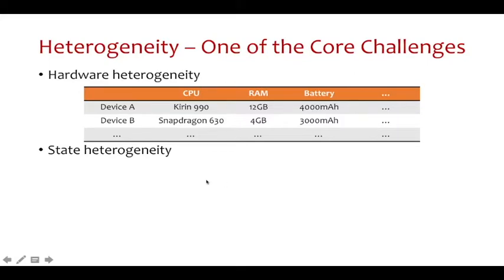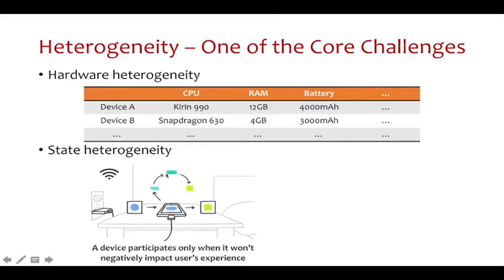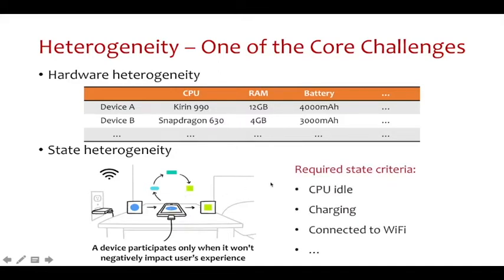The second one is state heterogeneity. It is because the state and running environment of participating devices can be various and dynamic. To protect users' experience, a device participates in FL only when it meets the required state criteria. For example, the CPU should be idle, the device should be charged and connected to a stable network like Wi-Fi. Intuitively, devices that seldom participate in an FL task can be underrepresented by the global model.